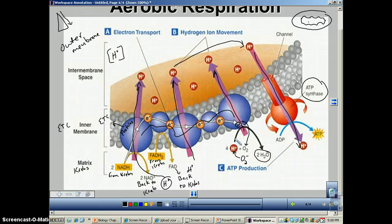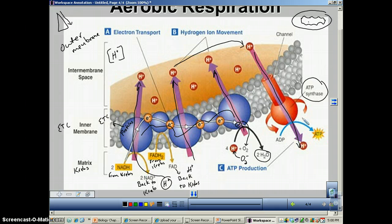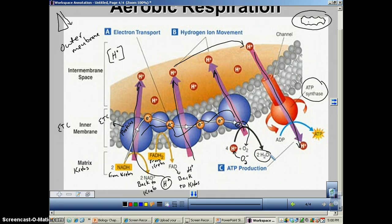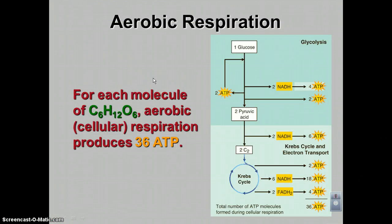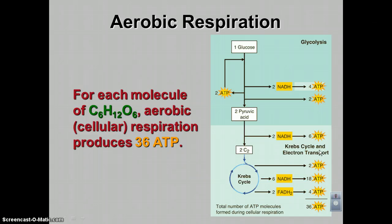To summarize: electrons move down the chain, pumping out hydrogens. The hydrogens re-enter through ATP synthase, making ATP. The electrons land on oxygen, which turns into water. The grand total of ATP produced by cellular respiration is 36. A few are made during glycolysis and the Krebs cycle, but most are made at the electron transport chain.